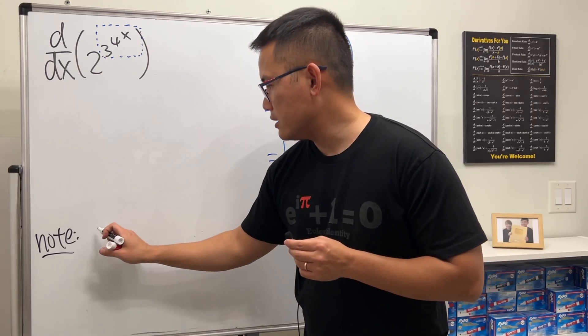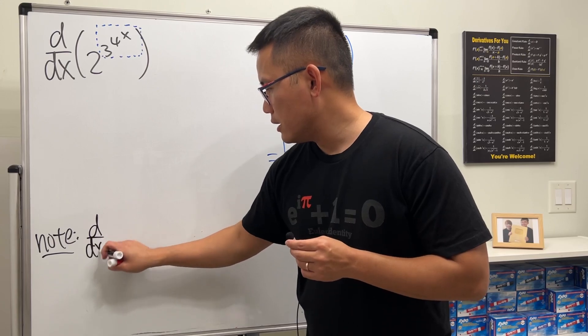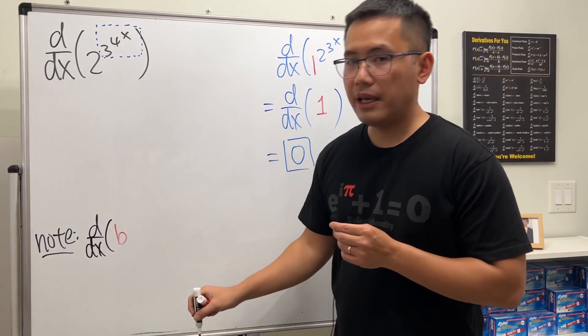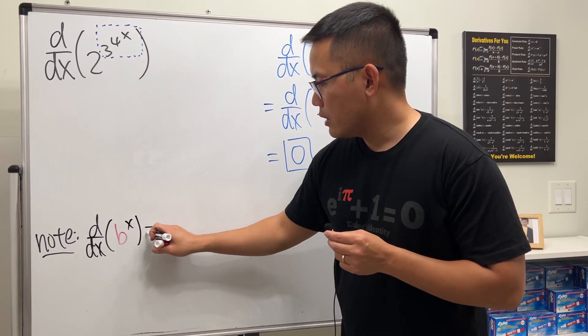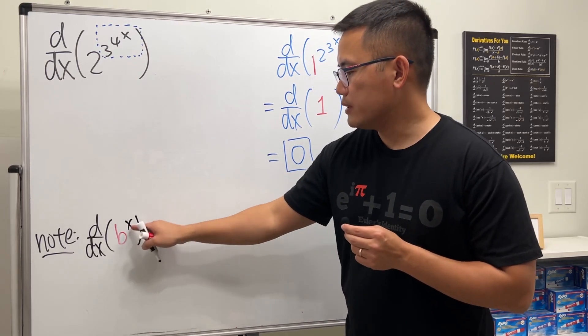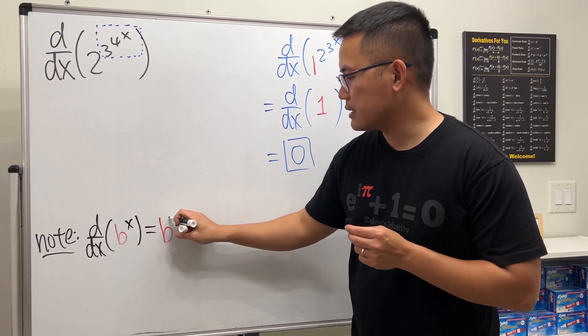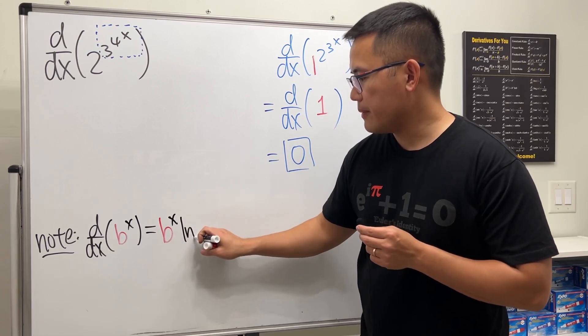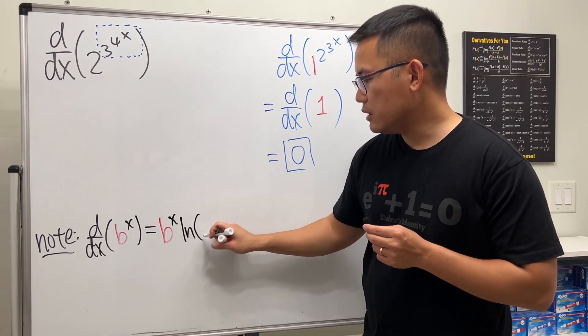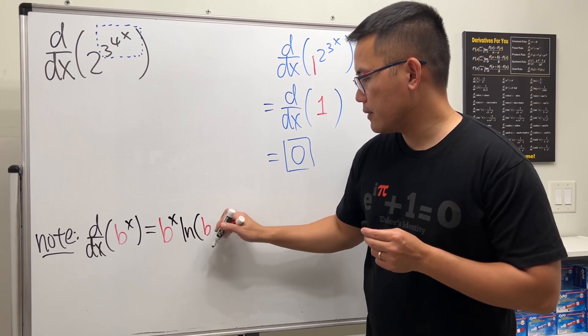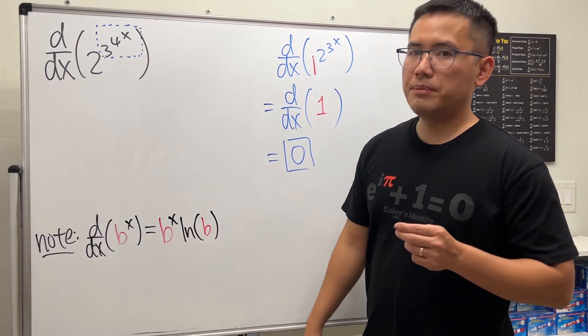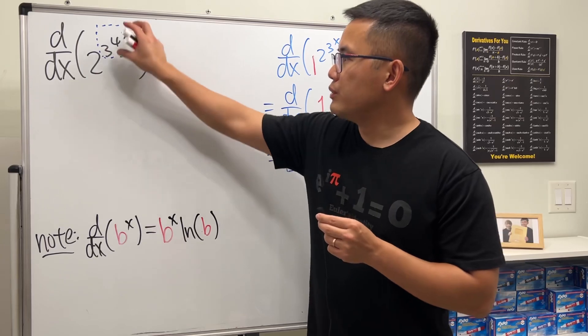The idea is, if we have to differentiate some number b for the base raised to the x power, the result is going to be we first repeat that, which is b to the x, and then we multiply by natural log of the base b. So definitely keep this in mind.